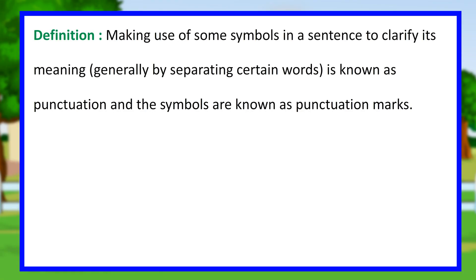Punctuation. Definition: making use of some symbols in a sentence to clarify its meaning, generally by separating certain words, is known as punctuation, and the symbols are known as punctuation marks.